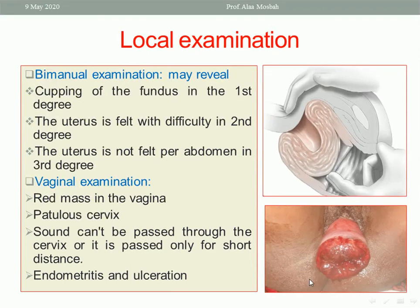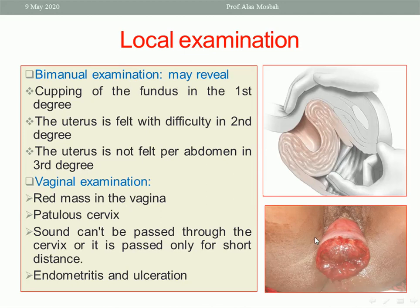By vaginal examination and inspection, we will see a reddish inflamed mass protruding through the vulva with a patulous cervix. If I try to insert a uterine sound, I cannot, because the uterus is turned inside out — there is no cavity. If it is first or second degree inversion, I can insert only for a short distance. There may also be signs of inflammation or ulceration if the inversion is prolonged and neglected.